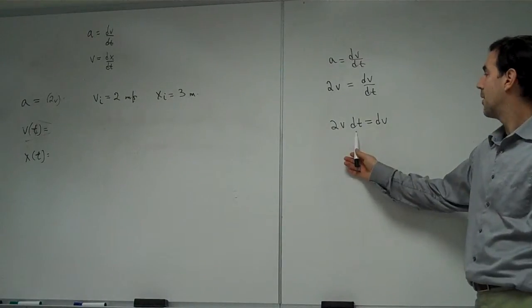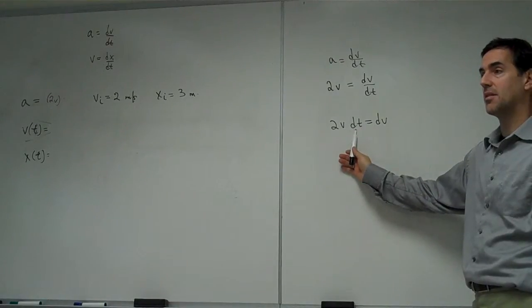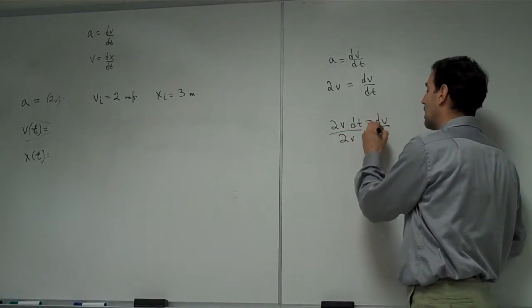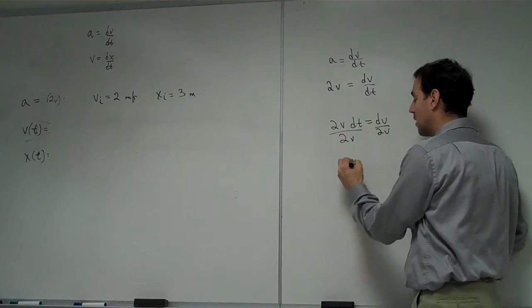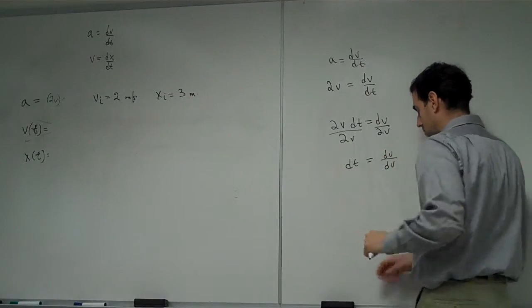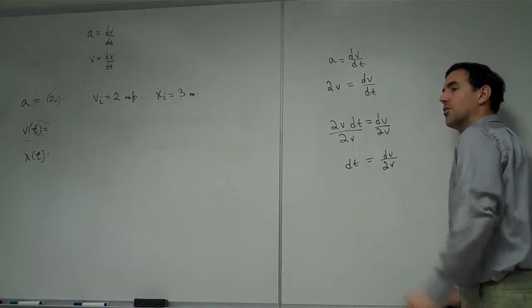His next step was to then divide both sides by, did you do v or 2v? 2v. Okay. So he then divides both sides by 2v. We have dt on the left side equals dv over 2v on that side.